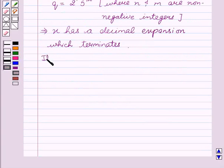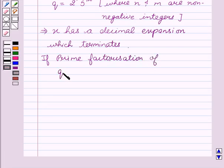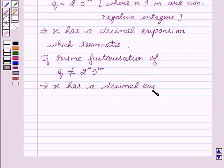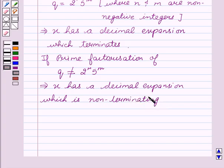But if prime factorization of q is not of the form 2 to the power n and 5 to the power m, this implies x has a decimal expansion which is non-terminating repeating.